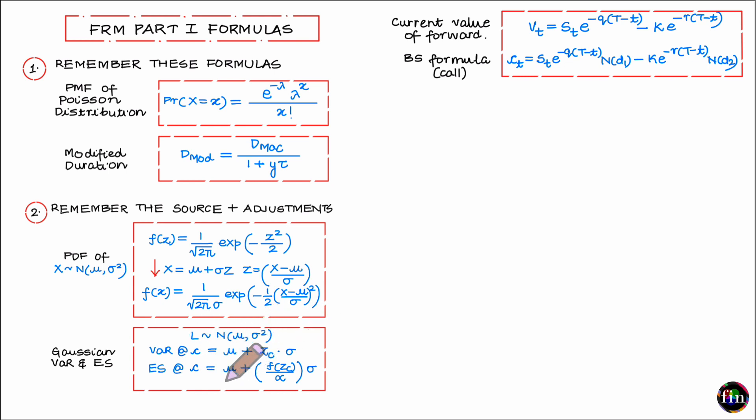In this case the expected shortfall at confidence level c again can be written to follow the same template and that is start at the mean of the distribution, move to the right this time by these many multiples of the standard deviation sigma. How many multiples? It is actually the pdf of the standard normal distribution evaluated at zc that divided by the level of significance which is 1 minus c. See it is the same template.